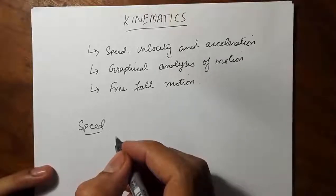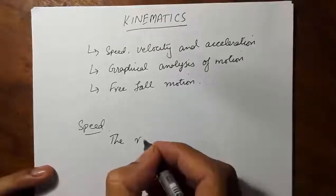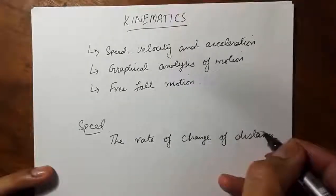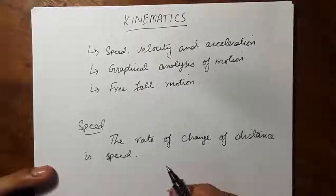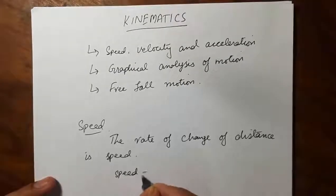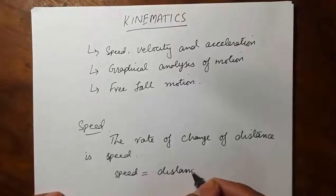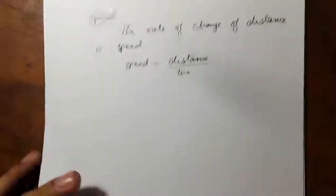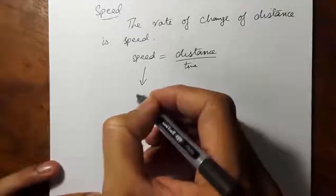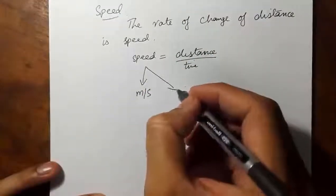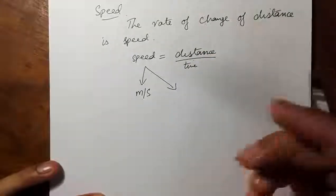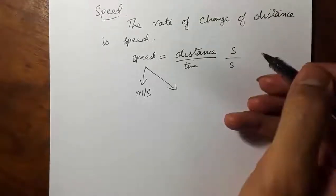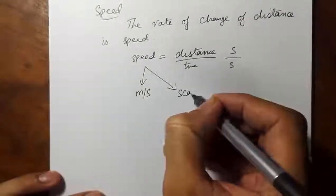Speed is the rate of change of distance. The rate of change of distance is speed, or we can say speed is equal to distance over time. The unit of speed is meter per second. Moreover, speed has some magnitude but it does not have any direction because distance is a scalar quantity. Time is also a scalar quantity, so scalar divided by scalar becomes scalar. So speed is also a scalar quantity.